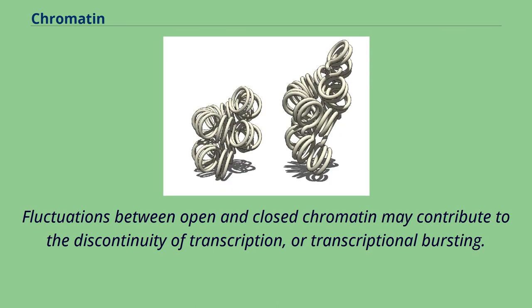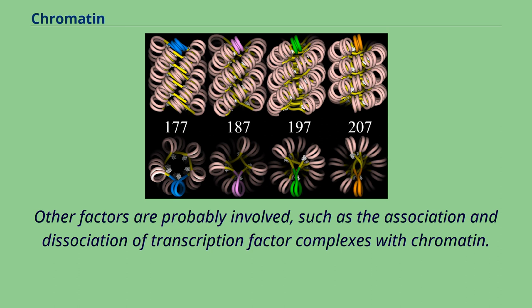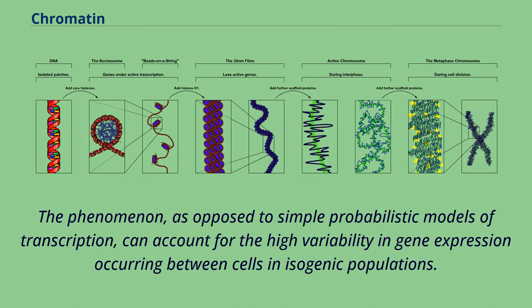Fluctuations between open and closed chromatin may contribute to the discontinuity of transcription, or transcriptional bursting. Other factors are probably involved, such as the association and dissociation of transcription factor complexes with chromatin. This phenomenon, as opposed to simple probabilistic models of transcription, can account for the high variability in gene expression occurring between cells in isogenic populations.